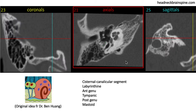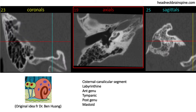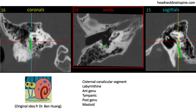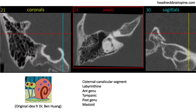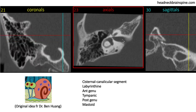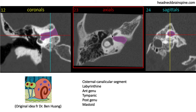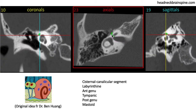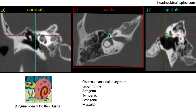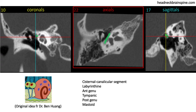Going further inferiorly, it becomes the mastoid segment, which then exits the skull base at the stylomastoid foramen. Going back to the level of the IAC, let's highlight some important relations. On the coronal section, the labyrinthine segment forms an 'eye on the nail' configuration, meaning the labyrinthine segment courses superiorly compared to the cochlea.